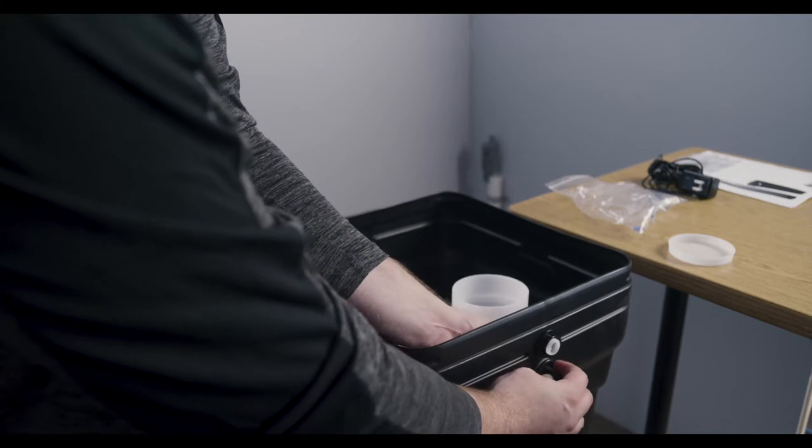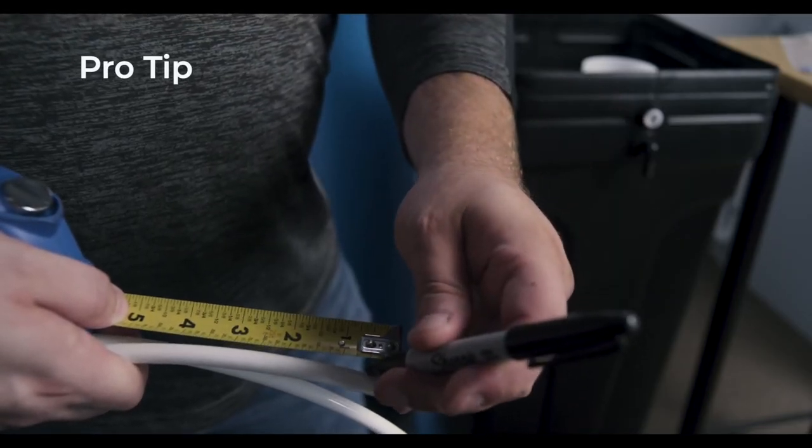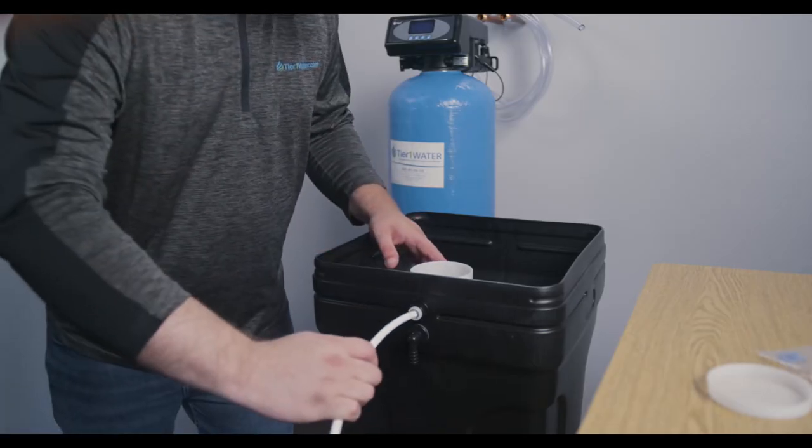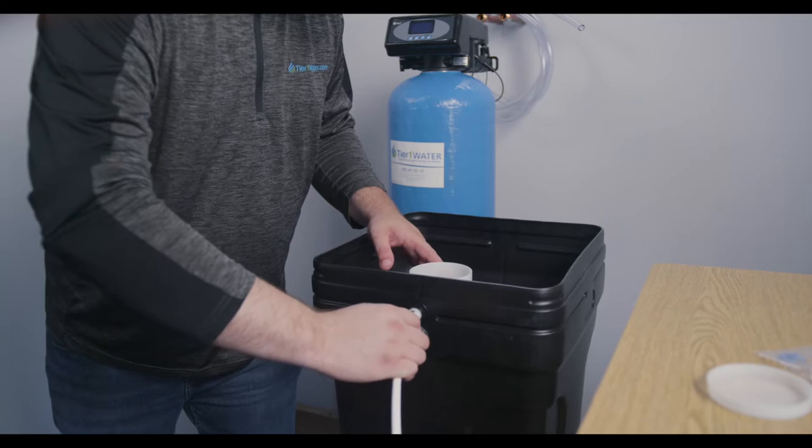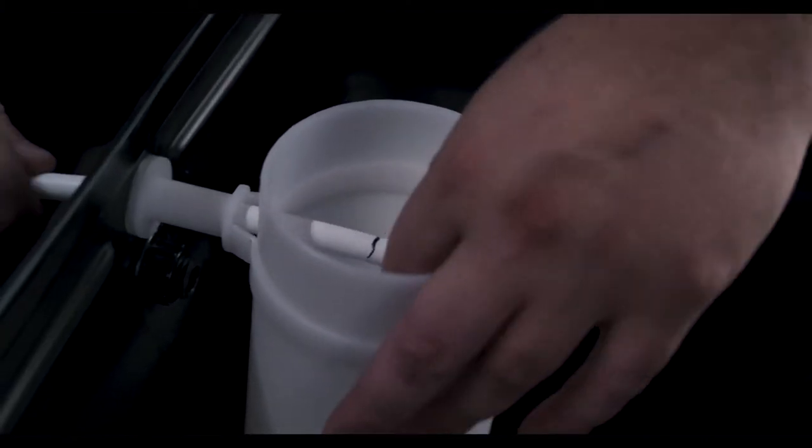Next, you will insert the brine line tubing. To make sure you insert the tubing all the way, draw a line half inch from the end of the tubing. Feed the brine line tubing through the hole in the bracket, pushing the tubing firmly into the quick connect fitting on the brine valve.